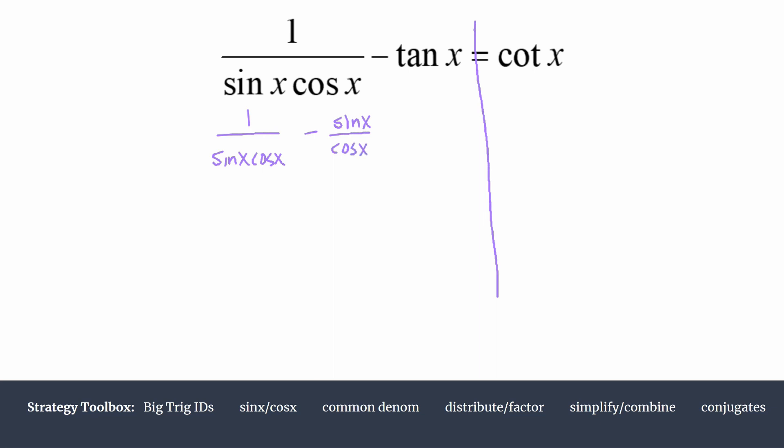Here's where that strategy of using a common denominator is going to come in handy. We have two terms that are fractions, and the second term, sine over cosine, almost has a common denominator, but we need it to have a sine in the denominator as well. We're going to multiply the second term by sine over sine, which is like multiplying by one. We aren't changing the integrity of that term, but we are manipulating it so we can combine it with the other.